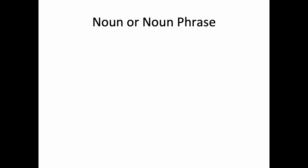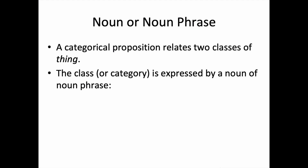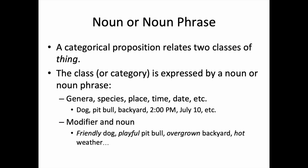The category or class is a category or class of thing, and categorical propositions relate to classes of things. The class or category is expressed by a noun or noun phrase. The noun can be genera, species, place, time, date, etc. For example, a class expressed by a noun could be 'dog,' 'pit bull,' 'backyard,' '2 p.m.,' 'July 10th,' etc. A noun phrase involves a modifier and a noun — for example: 'friendly dog,' 'playful pit bull,' 'overgrown backyard,' 'hot weather,' and so forth.